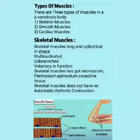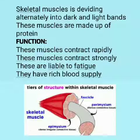Skeletal muscles have endomysium, perimysium, and epimysium connective tissues. Skeletal muscles do not have automatic rhythmic contraction. They are divided alternately into dark and light bands, and these muscles are made up of protein. Now you can see the structure of muscles. Functions of skeletal muscle: these muscles contract rapidly and strongly, they are liable to fatigue, and they have a rich blood supply.